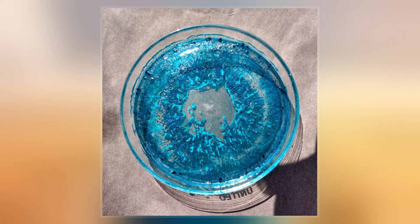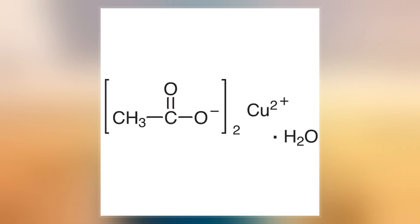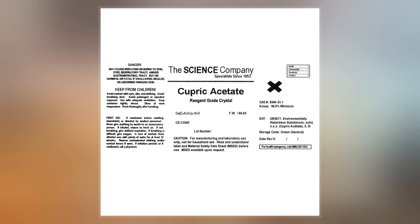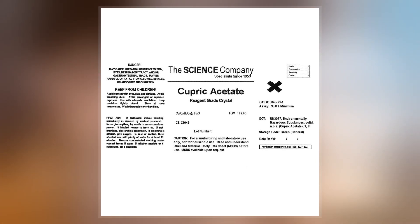Copper acetate, like all copper compounds, emits a blue-green glow in a flame. The mineral Hoganite is a naturally occurring form of copper acetate. A related mineral, also containing calcium, is passeite. Both are very rare.